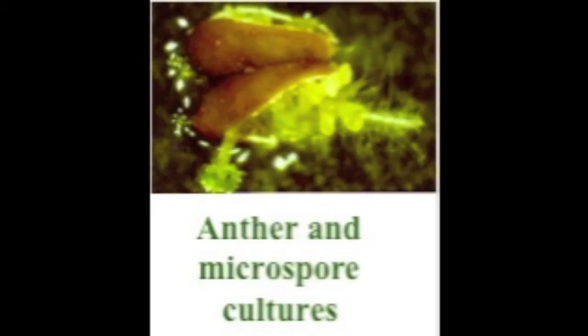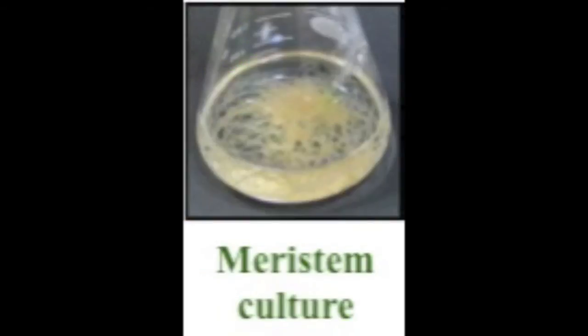Anther and microspore cultures are used for haploid plant production through direct embryogenesis or via a callus stage and subsequent embryogenesis. Treating such plant material with colchicine results in fertile dihaploids which are homozygous. Haploid tissue cultures can also be initiated from the female gametophyte.